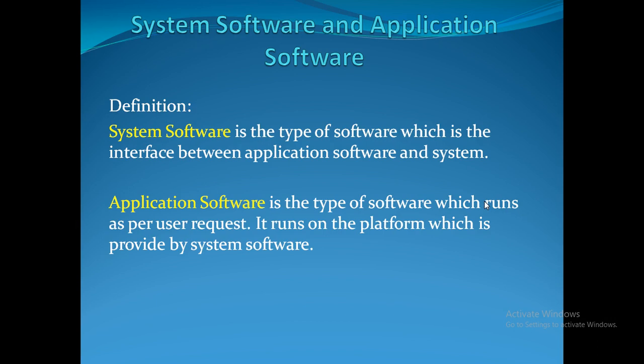We need system software to support application software. System software is the interface between application software and the system. Application software is a type of software which runs as per the user's request — for example, Facebook, YouTube, Amazon, and many others. It runs on the platform provided by the system software.